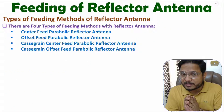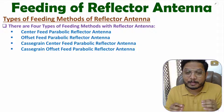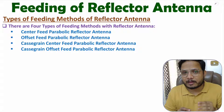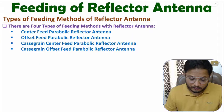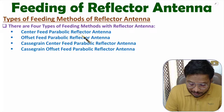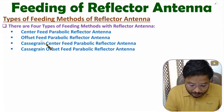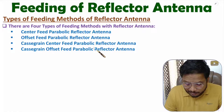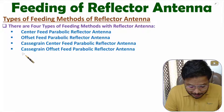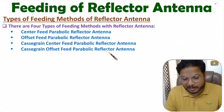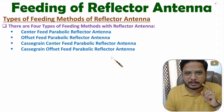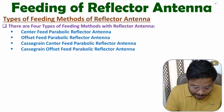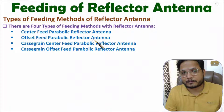Hello friends, welcome to Engineering Funda family. In this video I'll explain feeding methods of reflector antenna. In general there are four categories: first is center feed parabolic reflector antenna, second is offset feed parabolic reflector antenna, third is Cassegrain center feed parabolic reflector antenna, and fourth is Cassegrain offset feed parabolic reflector antenna. I'll explain all four feeding methods with great clarity.